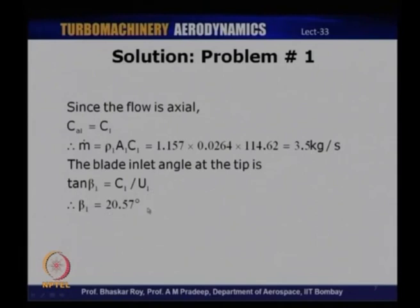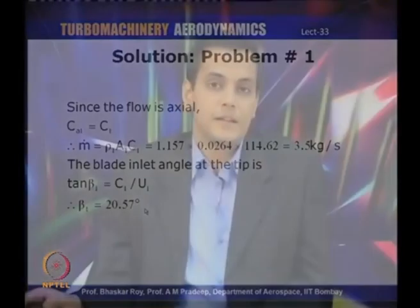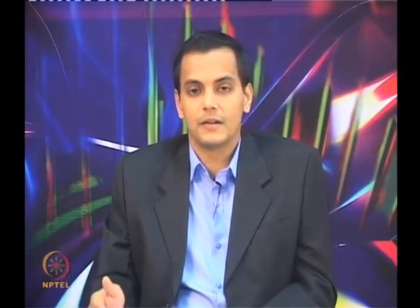The key to solving turbomachinery problems is to get the velocity triangles right. Even for a centrifugal compressor, the velocity triangle is the starting point for analysis. Once the velocity triangles are correctly constructed, solving the problem is straightforward. This applies to axial compressors, axial turbines, centrifugal or radial turbines — understanding the physics to construct velocity triangles is essential.